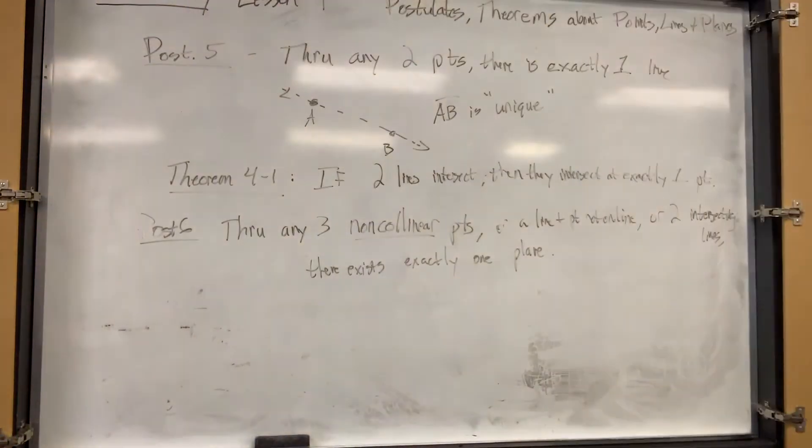Real quick, we're going to run through the rest of these theorems and postulates up here. If you want to look up here, and those of you at home, you can look at your text, write these down. It helps to have them in a separate place. Theorem 4.2 says: if there's a line and a point not on the line, then exactly one plane contains them.